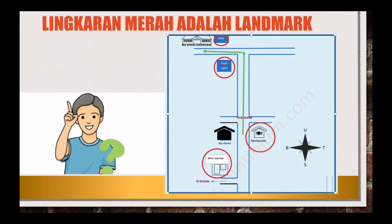Lihat di sana ada sebuah lingkaran merah di bagian paling bawah — itu adalah landmark sebelum belokan. Begitu pula dengan yang atasnya lagi, yang ada perempatan, ada landmark lagi. Jadi lingkaran merah adalah landmark. Landmark are important or popular. Kalian harus tahu betul tentang apa itu landmark — adalah sesuatu yang penting dan sangat terkenal, well known.